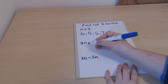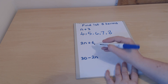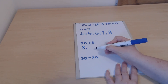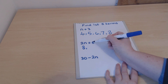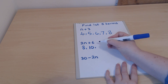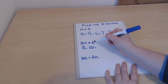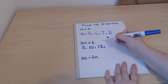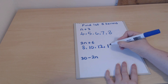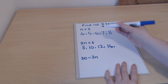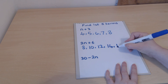Let's look at another one. When n is 1, we have 2 times 1 which is 2, plus 6, giving us 8. When n is 2, we have 2 times 2 which is 4, plus 6, giving us 10. When n is 3, 2 times 3 is 6, plus another 6, gives us 12. When n is 4, 2 times 4 is 8, plus 6, gives us 14. When n is 5, 2 times 5 plus 6 gives us 16.